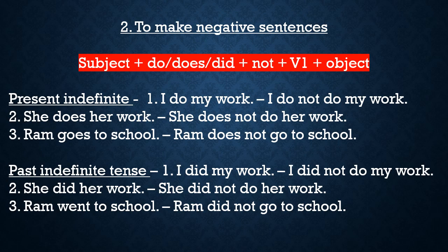In the sentence 'I do not do my work', the do before not is the helping verb. As mentioned, not ke pahle ek helping verb hamesha lagaya jaata hai. Do not ke baad jo do hai woh main verb hai, jiska arth hai karna. Second example: 'She does her work' — negative banane ke liye, she is a singular subject and does is in present tense, so helping verb does lagega: 'She does not do her work.'